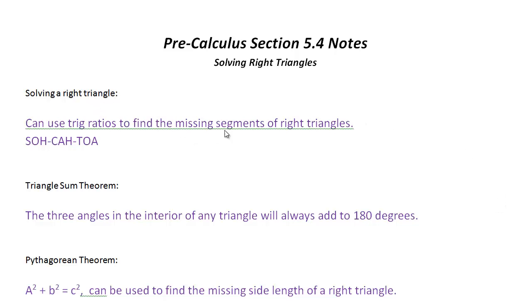In order to do that, we need to remember the acronym SOHCAHTOA, where sine is the ratio of the opposite over the hypotenuse, cosine is the ratio of the adjacent to the hypotenuse, and tangent is the ratio of the opposite side to the adjacent side.